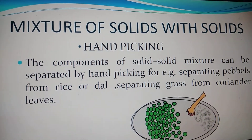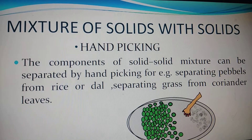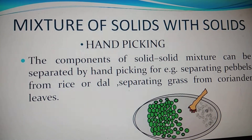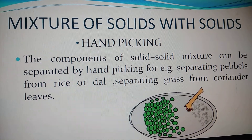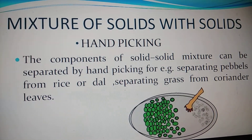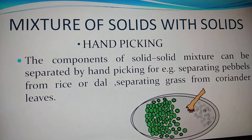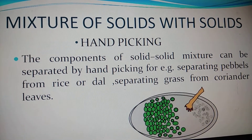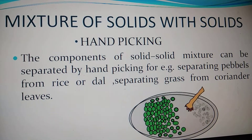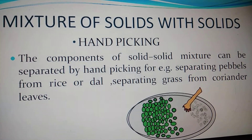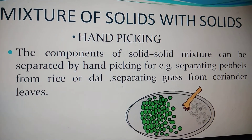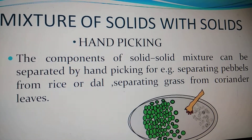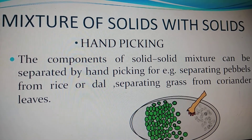Here we use the method of hand picking. Hand picking is the method in which we separate out solid-solid mixtures using our hands. We pick the non-usable components out of the usable components. For example, separating pebbles from rice or dal, or separating grass from coriander leaves or mint leaves. Here we use our hands to separate out the non-usable components.